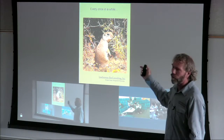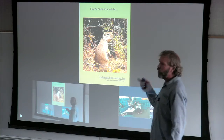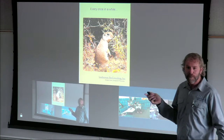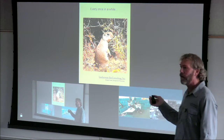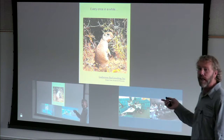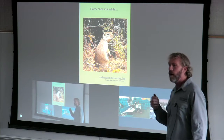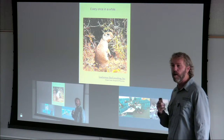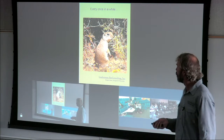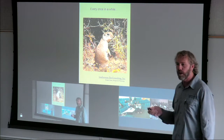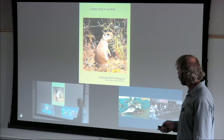Every once in a while we get to see some cool stuff. This animal is a squirrel — specifically the Mojave ground squirrel, a state-threatened animal that occurs in the Mojave Desert north of Victorville and around Barstow. I was doing a desert tortoise survey several years ago and came across a small population of Mojave ground squirrels.